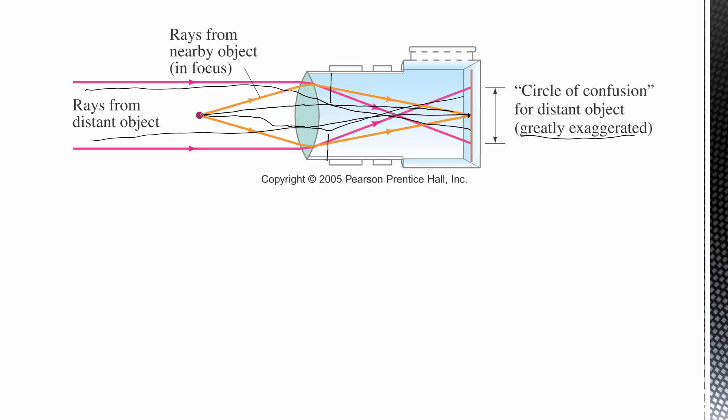Now, they might not be at the exact perfect spot, but they will be so slightly out of focus that you might not notice. So the smaller the aperture, the bigger your depth of field is what we call it.